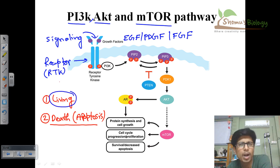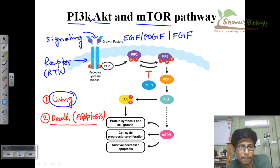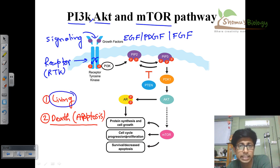I encourage you to look at my channel for a detailed video on how RTK functions. Briefly: RTKs are transmembrane proteins embedded in the cell membrane, consisting of two different subunits. Once the ligand — say, epidermal growth factor — binds with the receptor, the tyrosine subunits have the ability to autophosphorylate themselves. One tyrosine kinase subunit phosphorylates itself, then phosphorylates the other — a kind of cross-phosphorylation. Once cross-phosphorylation is done, the next step is activated.